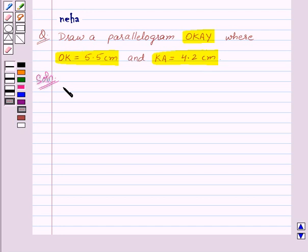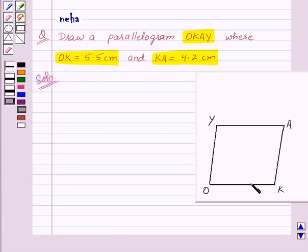Let us draw the rough sketch of the given parallelogram to decide how to draw the parallelogram with the given data. Here we have a parallelogram O-K-A-Y and in the question we are given that O-K is 5.5 cm and K-A is 4.2 cm.